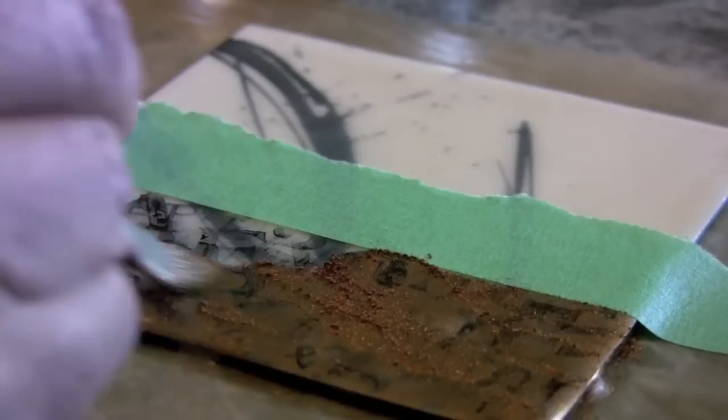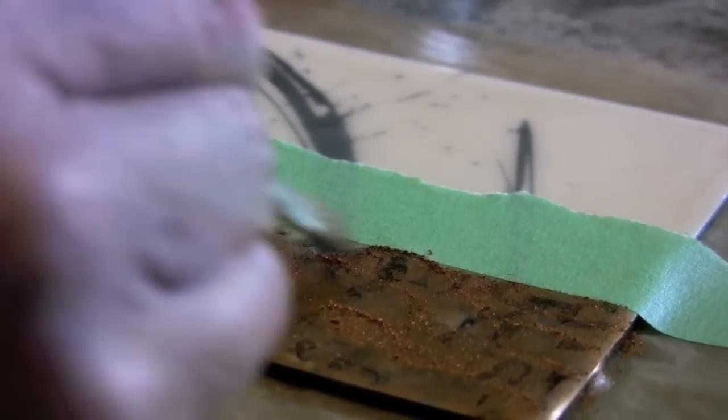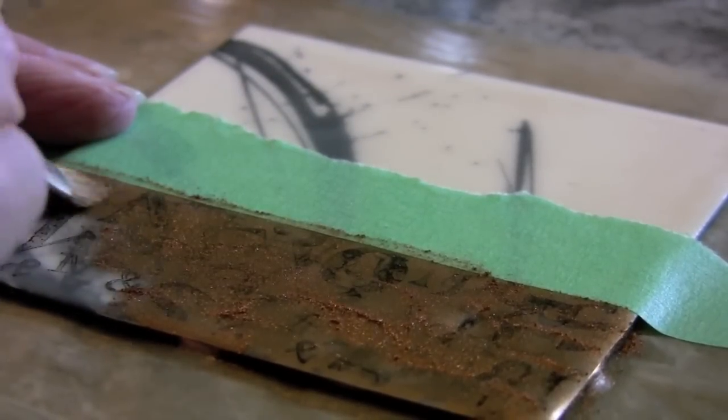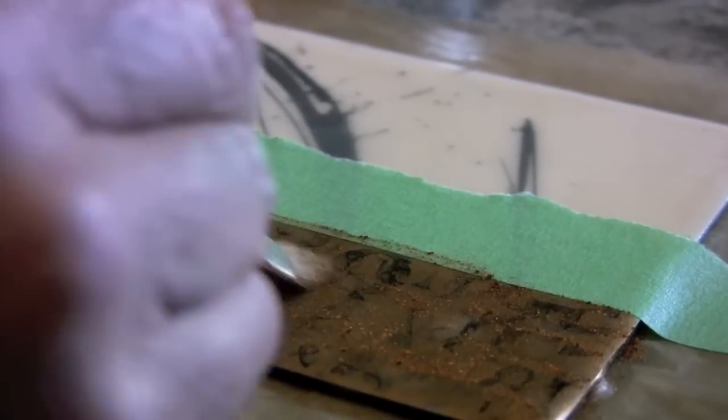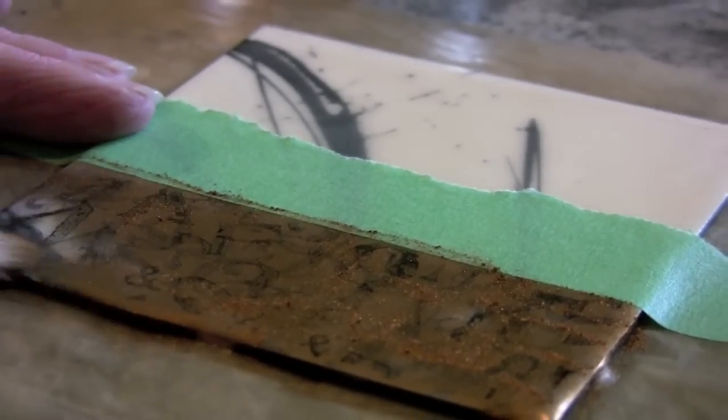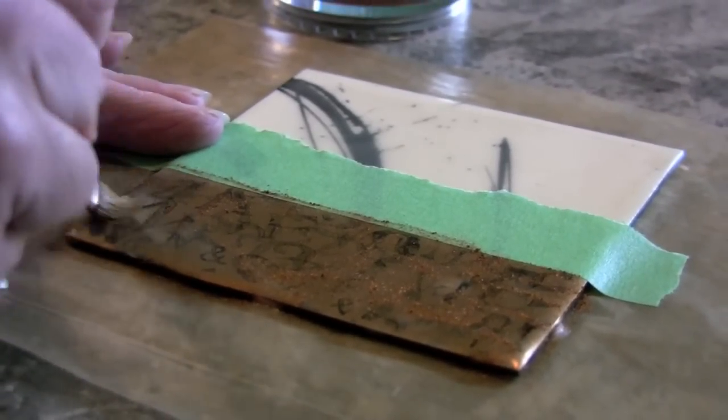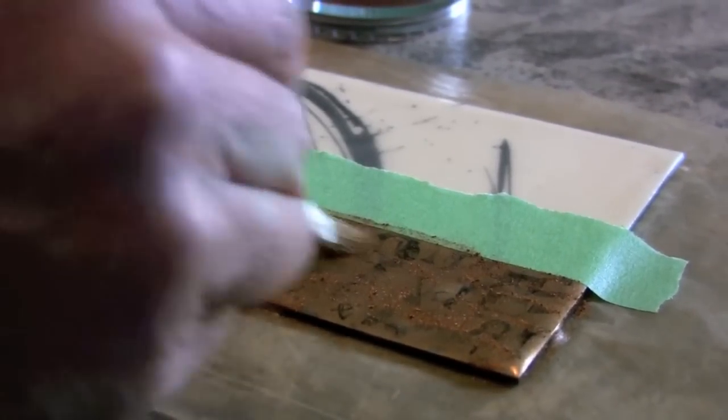Here you can see I'm using a soft bristled brush and in a circular motion burnishing in that metallic powder into the surface of the wax. The metallic powders, there's all sorts of different brands that you can buy from your nearest art supply store. Crafting stores have a lot of metallic finish powders.